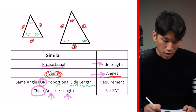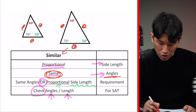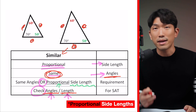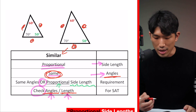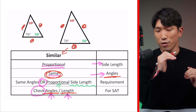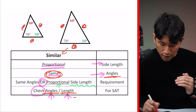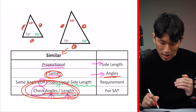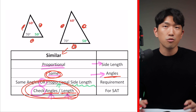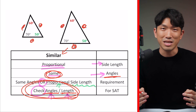For the SAT, when it comes to similar triangles, you just have to check whether they have the same set of angles or the same set of side lengths — that's the main thing they'll test you on. For hard difficulty questions, they simply twist off this main idea of whether the two triangles are similar or not.